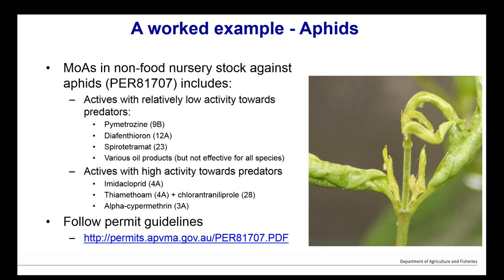These four active ingredients at the top are relatively soft on predators. If you are trying to maintain a population of predators, rotate between these, keeping in mind the guidelines on how many times you can use that product per season. The actives further down have high activity against predators, so if you spray them you're probably not going to have predators around unless spraying only to a hotspot. There's a link to permit 81707 — it has a whole range of products available for many different pests.